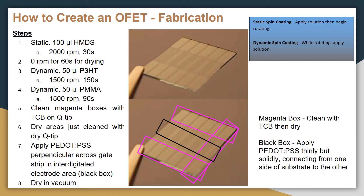The steps to create an OFET are as follows. Step 1: Statically spin coat 100 microliters of HMDS at 2000 RPM for 30 seconds. Step 2: Dry the sample for 60 seconds at 0 RPM. Step 3: Dynamically spin coat 50 microliters of P3HT at 1500 RPM for 2.5 minutes. Step 5: Clean the sample as indicated with the magenta box on the bottom picture using a Q-tip covered in TCE.